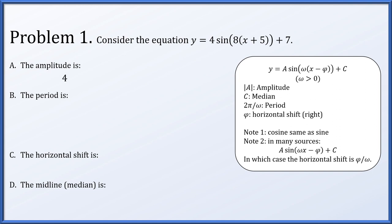So looking at our function, the amplitude is 4, the absolute value of the coefficient of the sine function. The period is 2 pi over 8, which is pi over 4. The horizontal shift is 5 units left, because x minus phi represents a shift of phi to the right — so since we have x plus 5, that's 5 units left — and the median is y equals 7.